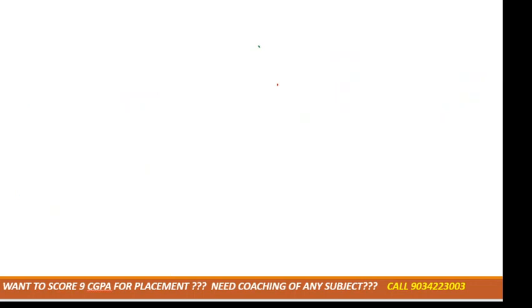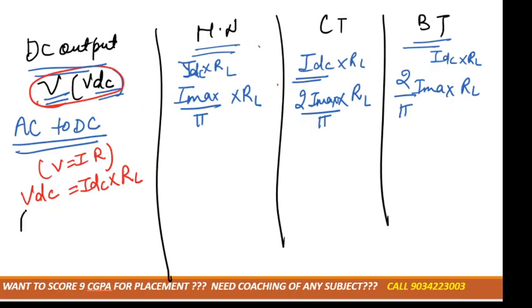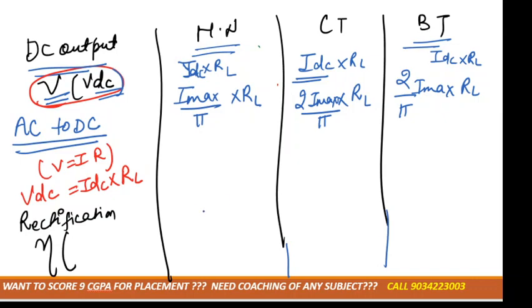Next term is rectification efficiency. As you know, efficiency is output divided by input. In the half wave rectifier its efficiency is 40.6%. But in case of full wave rectifier it is 81.2%.